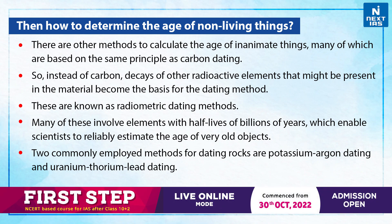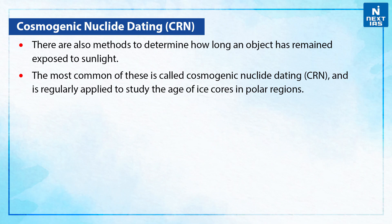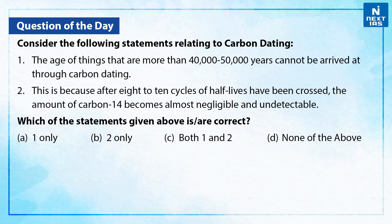Two commonly employed methods for dating rocks are potassium-argon dating and uranium-thorium-lead dating. There are also methods to determine how long an object has remained exposed to sunlight. The most common of these is called cosmogenic nuclide dating, and is regularly applied to study the age of ice cores in polar regions. So, this was a little bit about carbon dating.